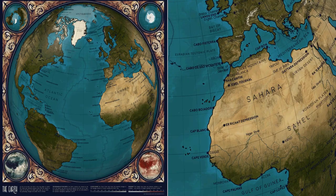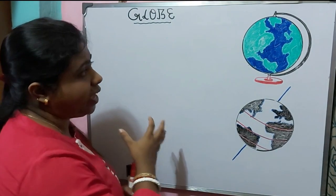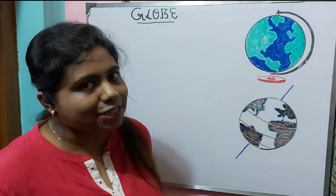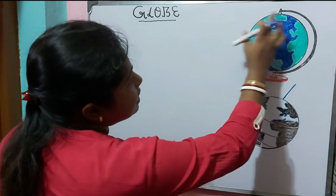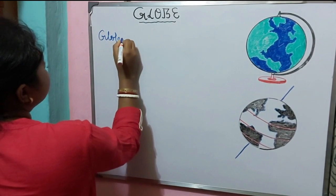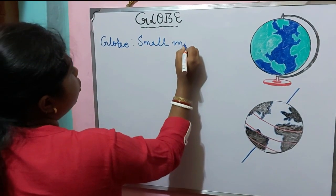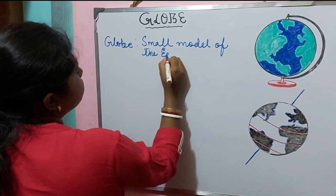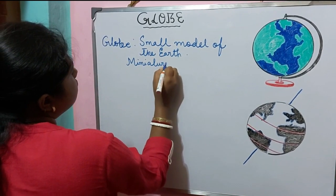To solve this problem, geographers discovered two important tools — one is the globe and the other is the map. Today we are going to read about the first important tool, and our chapter is related to that important tool — the globe. So what is a globe? You can see this is a model of a globe. A globe is a small model of the Earth, also called a miniature form of the Earth.